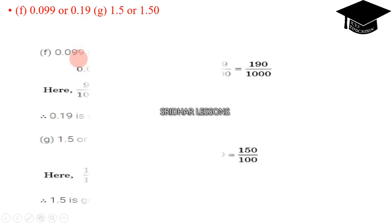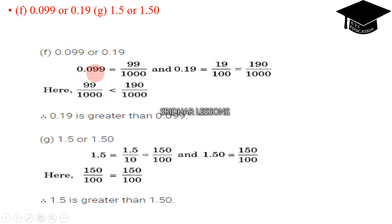Next, 0.099 or 0.19, which one is greater? 0.099 can be written as 99 by 1000, and 0.19 can be written as 19 by 100. To make the equal denominator, 19 times 10 is equal to 190, and 100 times 10 is 1000. Here 99 by 1000 is less than 190 by 1000. Therefore 0.19 is greater than 0.099.